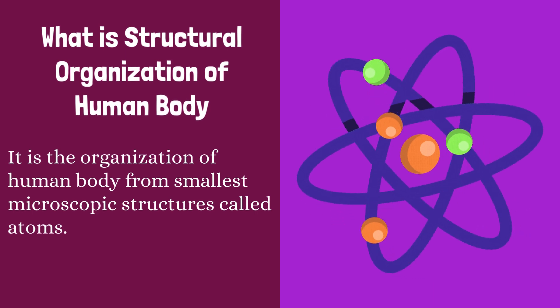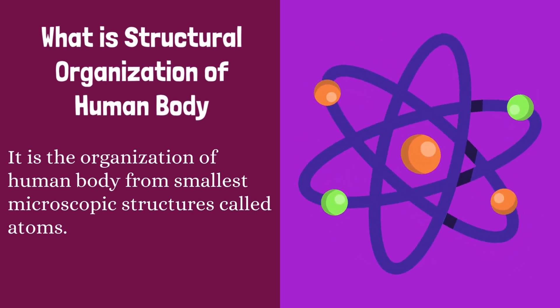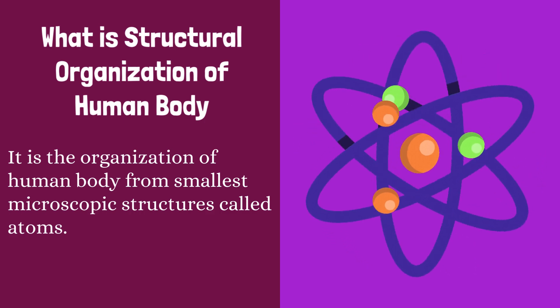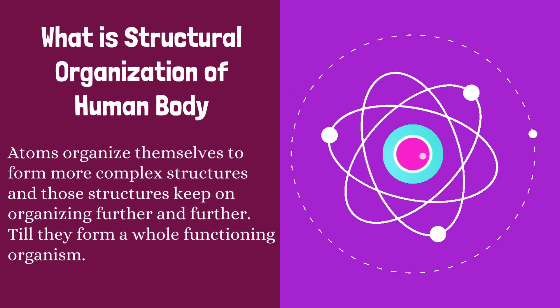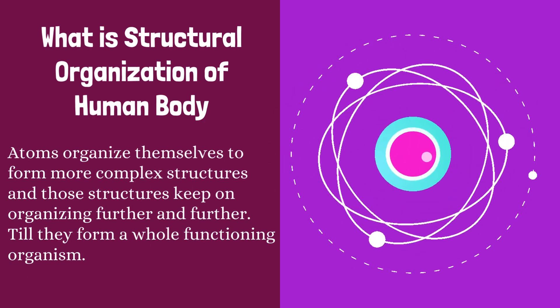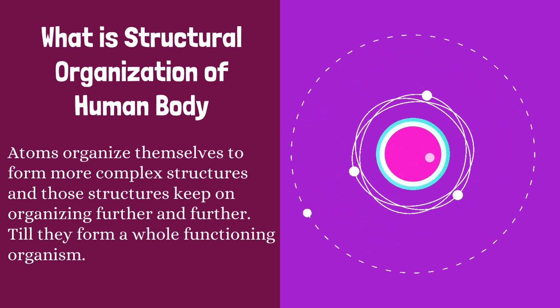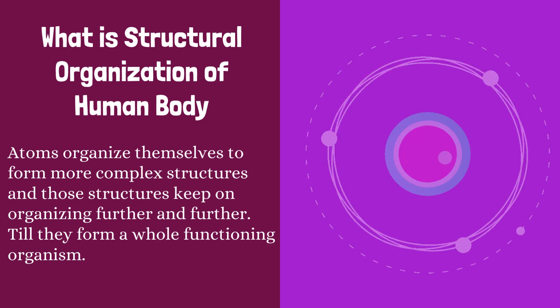What is structural organization of human body? It is the organization of human body from the smallest microscopic structures called atoms. Atoms organize themselves to form more complex structures, and those structures keep on organizing further and further till they form a whole functioning organism.